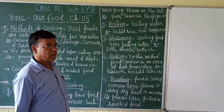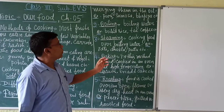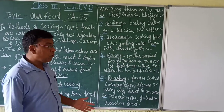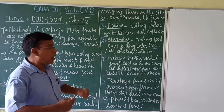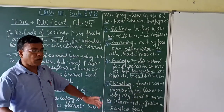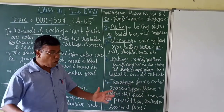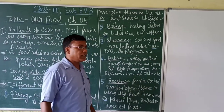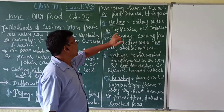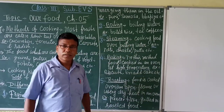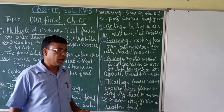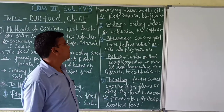The second method is boiling. Boiling is the method of cooking food in boiling water. We all eat rice — how is it cooked? Rice is cooked in water. First the water is boiled and then the rice is cooked in it. Some examples are boiled rice and boiled eggs. We boil them and then use them in our diet.